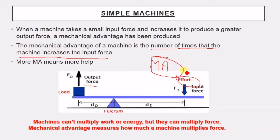If your input force was 100 newtons and the machine produces 300 newtons, the machine triples your force — the mechanical advantage is 3. Mechanical advantage measures the help of this machine: the greater the mechanical advantage, the more this machine can help. More MA means more help.